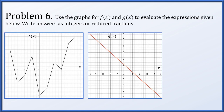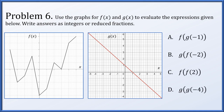In problem 6 we're given two graphs — a piecewise-defined function f of x and a straight line g of x. For f of g of negative 1: plugging negative 1 into g gives 2, then plugging 2 into f gives 1. So f of g of negative 1 equals 1.